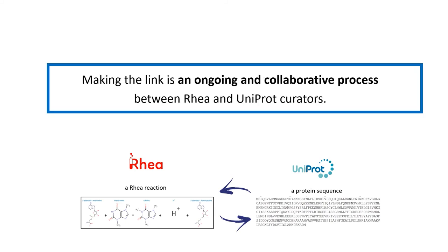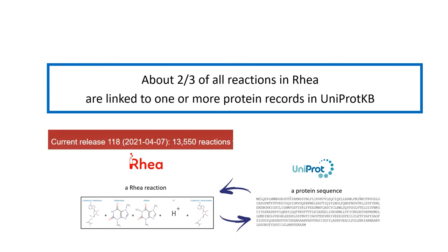Making the links between protein sequences and enzymatic activity is an ongoing and collaborative process between RHEA and UniProt curators. About two-thirds of all reactions in RHEA are linked to one or more protein records in UniProt KB, but this number, as well as all other numbers shown in this tutorial, will change regularly depending on the evolution of biological knowledge and on bio-curation efforts.